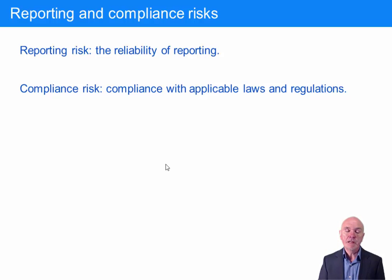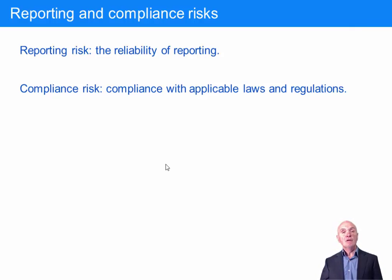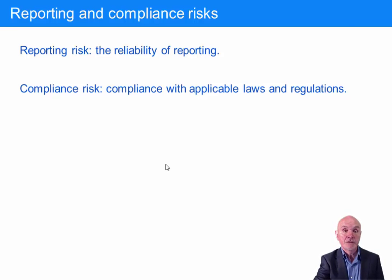The final category is compliance risk. There are more and more rules and regulations with which businesses have to comply. If you don't comply, there can be considerable downside risks — fines, court actions, damages, and you could even lose your right or licence to operate as a particular sort of business. So these could put you out of business.